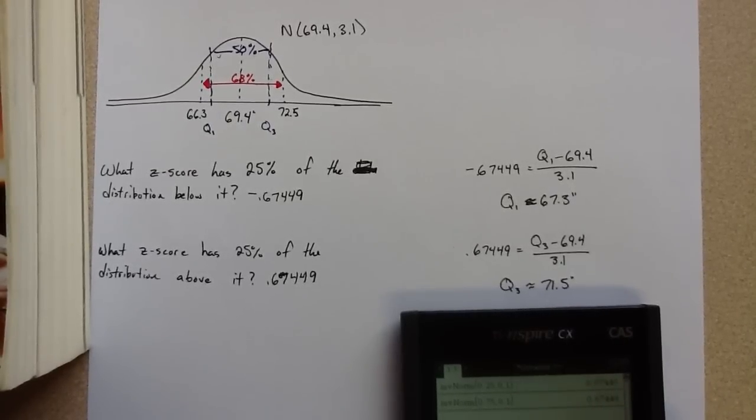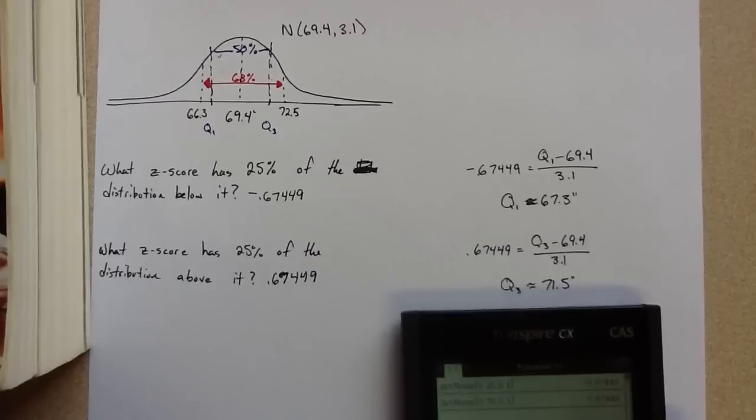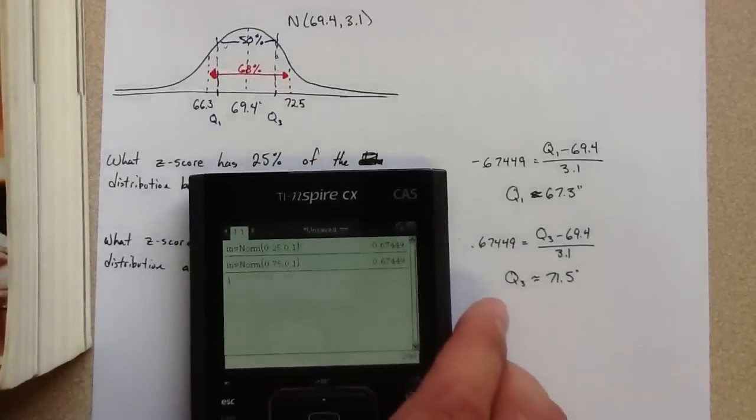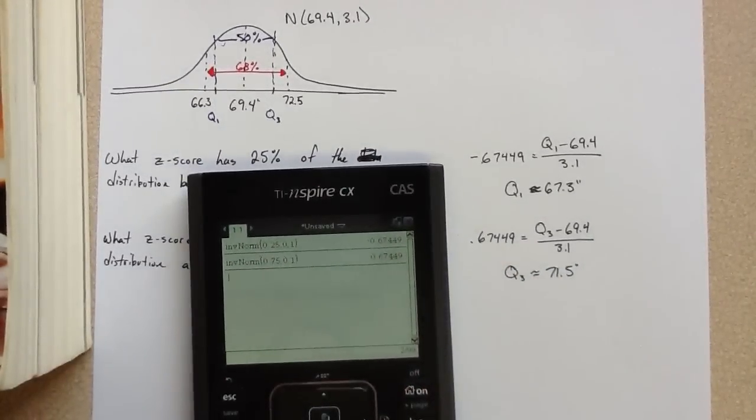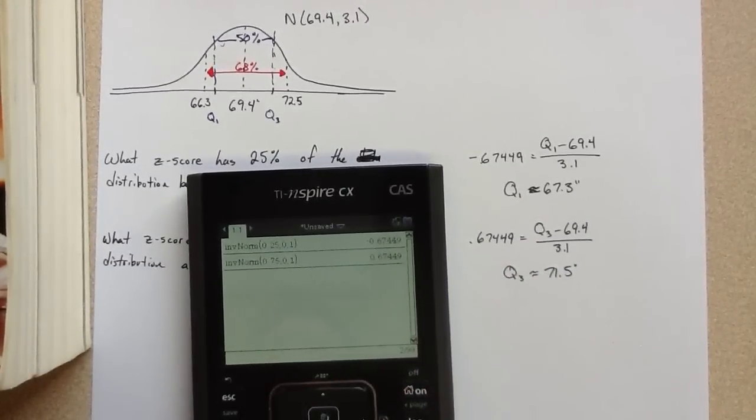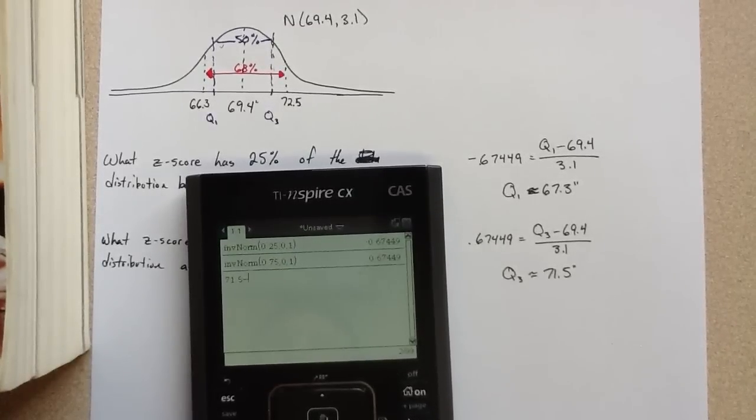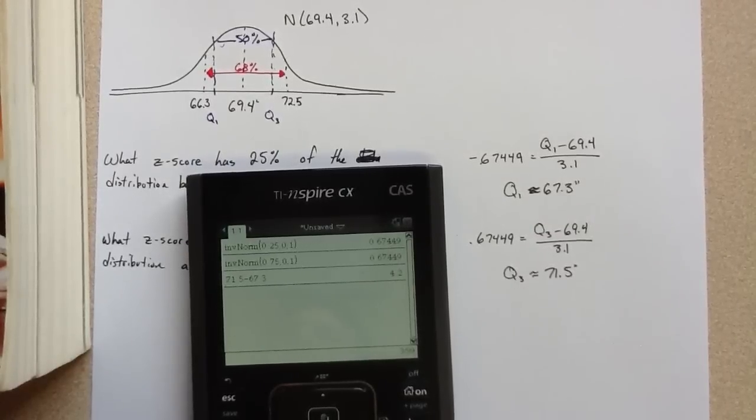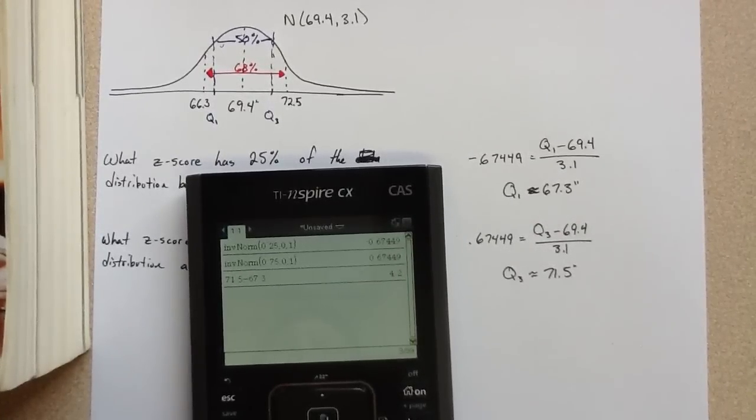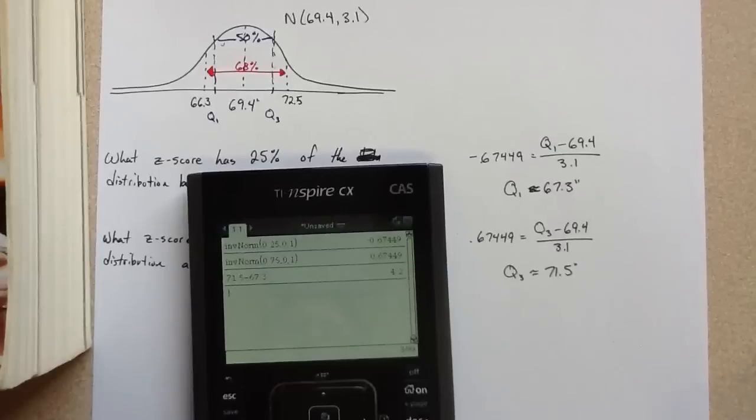So if Q3 is 71.5 and Q1 is 67.3, to find the IQR, we would just subtract. And we would get an IQR approximately 4.2 inches.